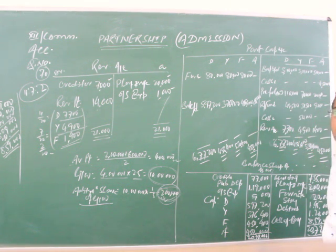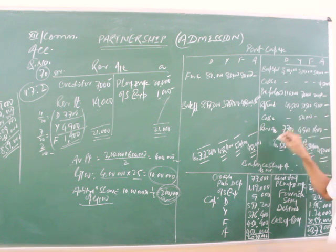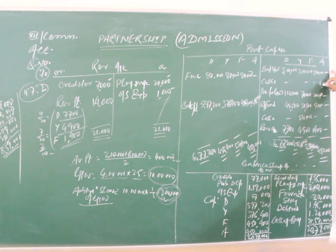Yassim brings additional capital during the year by cash 50,000. Revaluation profit distributed to old partners.